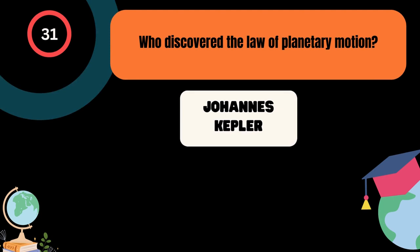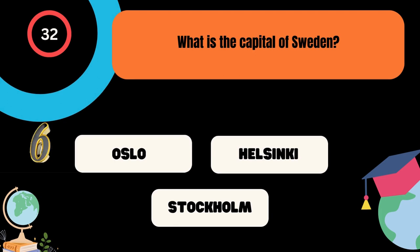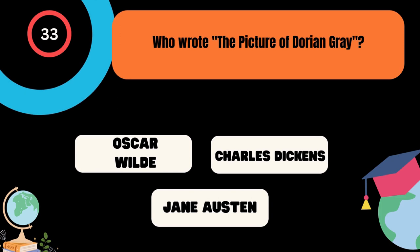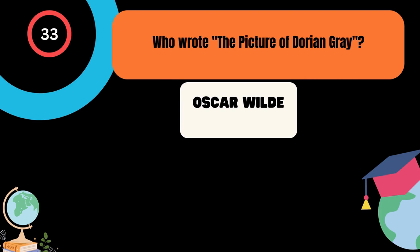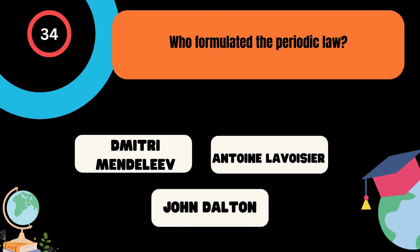What is the capital of Sweden? A. Oslo, B. Helsinki, C. Stockholm. And the correct answer is Stockholm. Who wrote The Picture of Dorian Gray? A. Oscar Wilde, B. Charles Dickens, C. Jane Austen. And the correct answer is Oscar Wilde. Who formulated the periodic law? A. Dmitry Mendeleev, B. Antoine Lavoisier, C. John Dalton. And the correct answer is Dmitry Mendeleev.